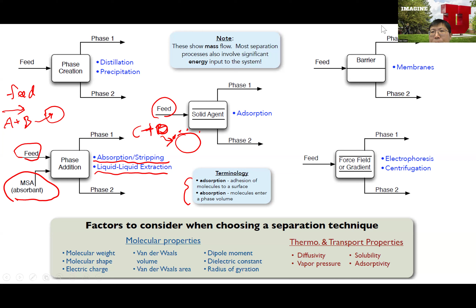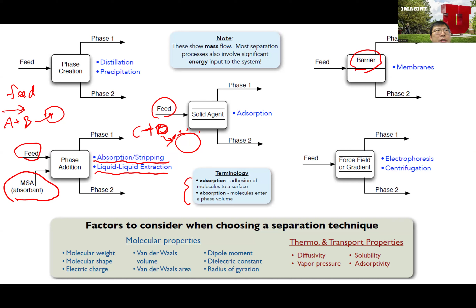The fourth type of separation process is one where you introduce a barrier. A barrier is something that can allow one of the components in your feed mixture to selectively pass through. Typically it's a membrane that has different permeability to each component in your mixture, so it only allows one component to go through. We will talk about some examples later.